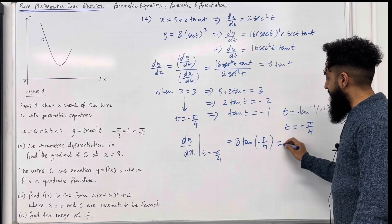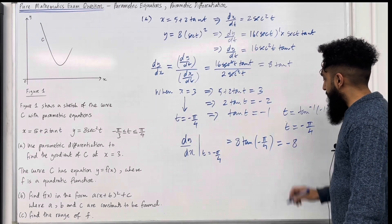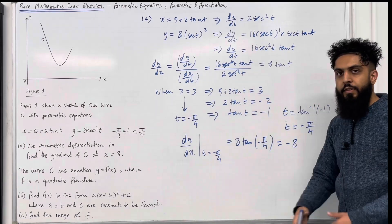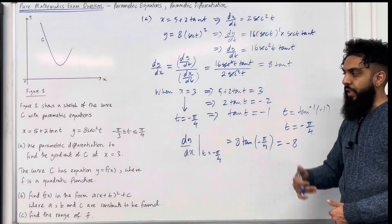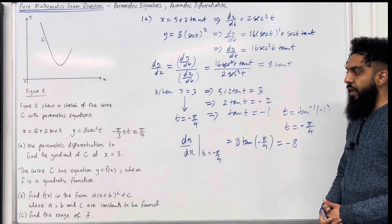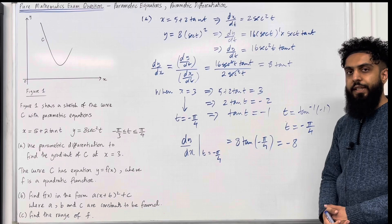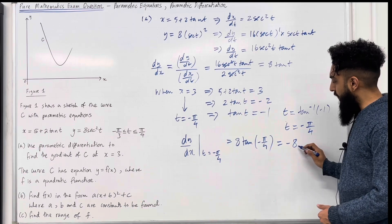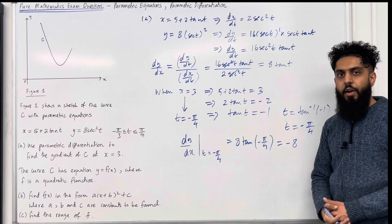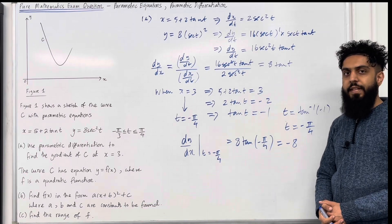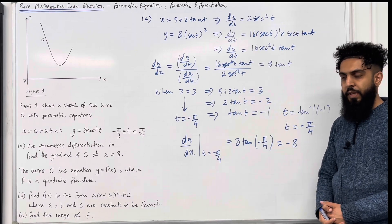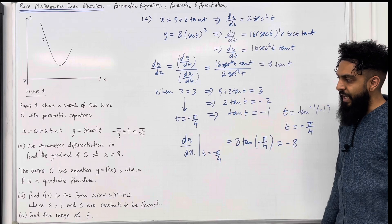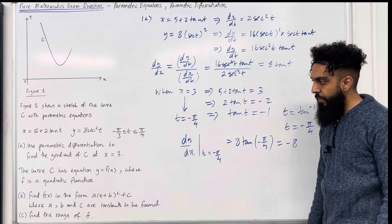So, ladies and gents, the gradient of the curve C at x equal 3 is minus 8. That completes part A of the exam question. Let's move on to the next part of the question.